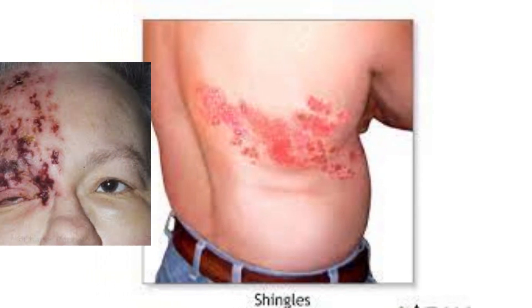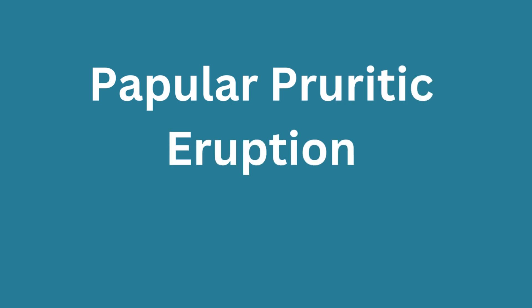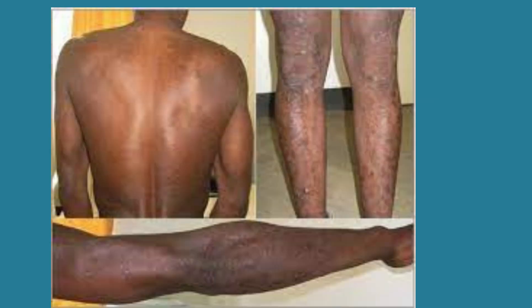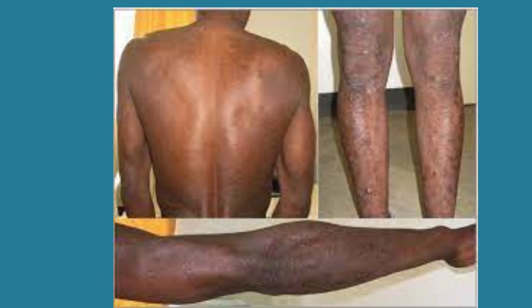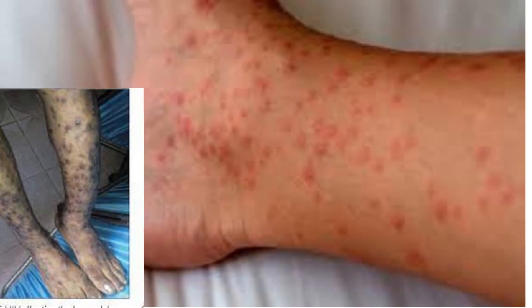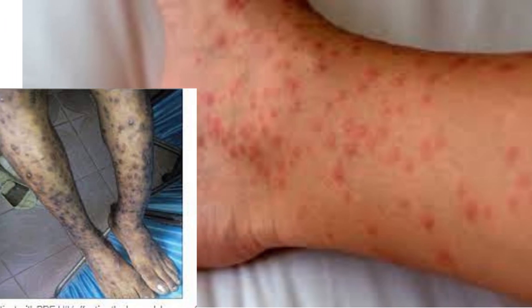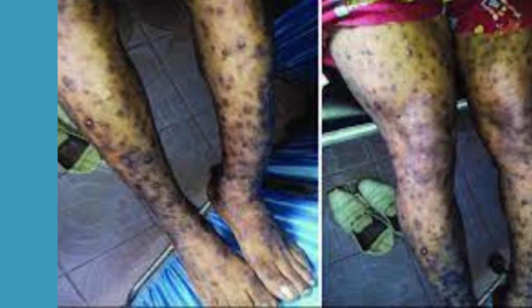3. Papular pruritic eruption is a skin problem that happens when small bumps appear on the arms, legs, face, and body, and they make you want to scratch them a lot. This usually happens when your immune system is not working well because of HIV.